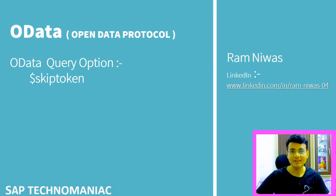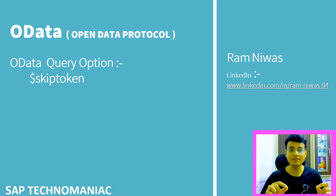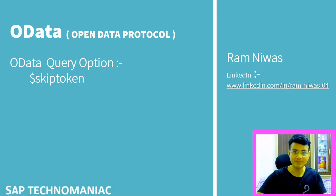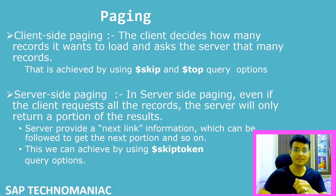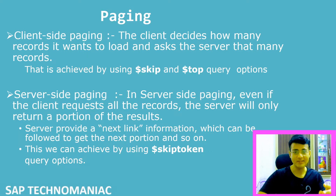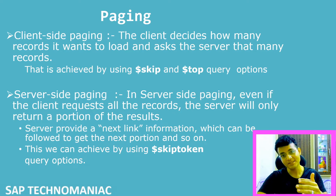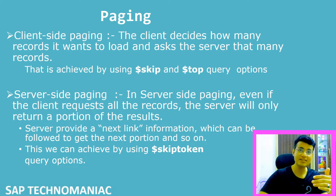Welcome to SAP Technomaniae. In this video we will discuss another query option called skip token. Till now we have discussed about client-side paging. There are two kinds of paging: client-side paging and server-side paging, which we discussed in the last video.